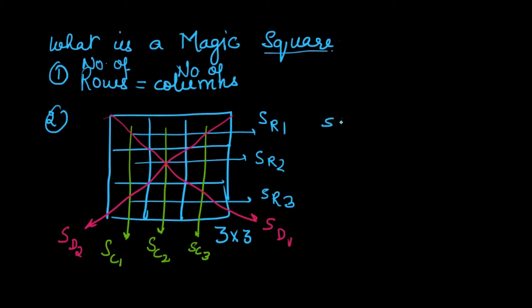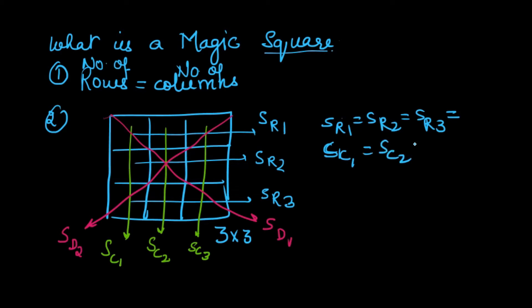The second property of a magic square is that the sum of all the rows, the sum of all the columns, and the sum of all the elements that lie on the diagonals are all the same. Such a square is called a magic square.